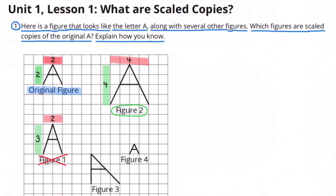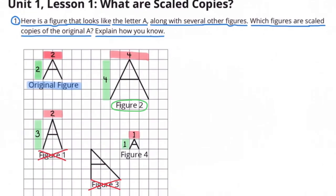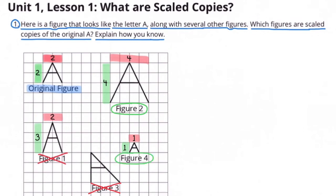Let's take a look at Figure 3. Figure 3 is not symmetrical like the original figure, so that is not a scaled copy. Let's take a look at Figure 4. Its height is one unit and its width is one unit, so yes, that is a scaled copy.